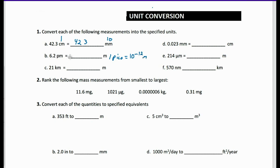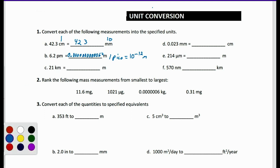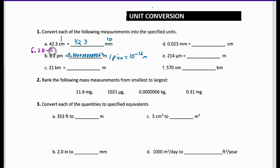If we were to write this out, we would have 0.1, 2, 3, 4, 5, 6, 7, 8, 9, 10, 11 zeros, then 6, 2. That's one way to write it. The easier way is scientific notation, which you should have learned about last year — that's just 6.2 × 10 to the negative 12th meters.